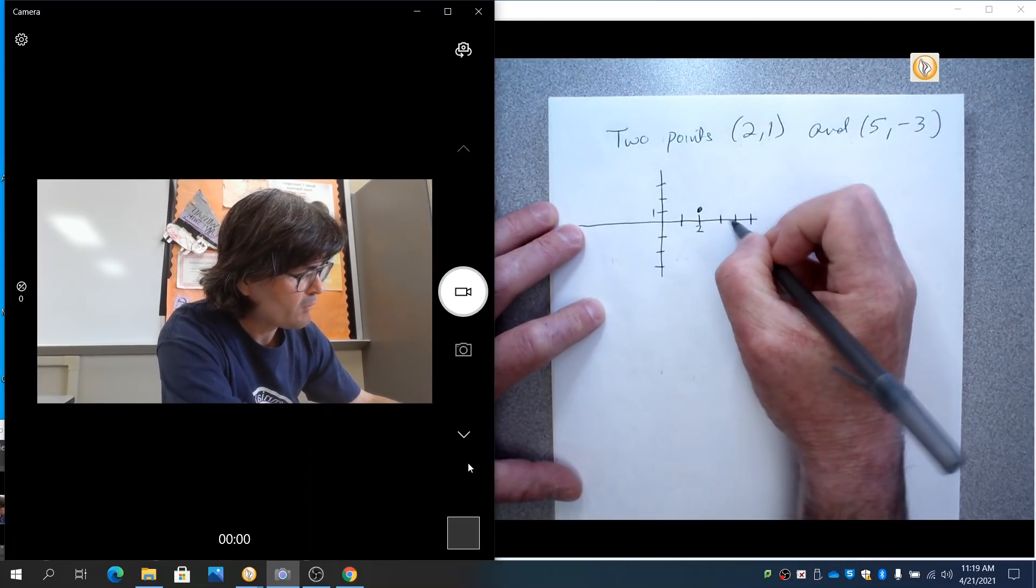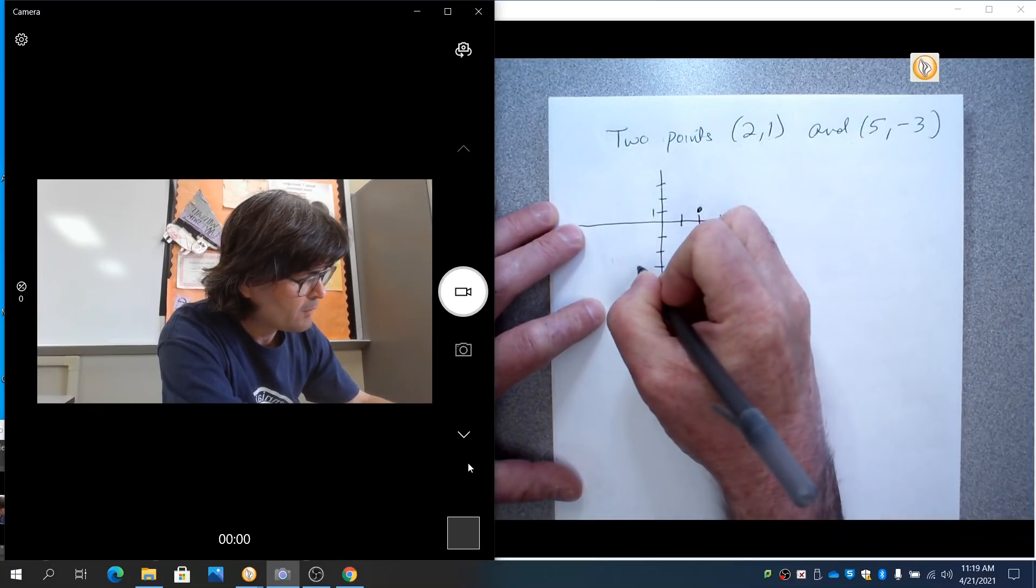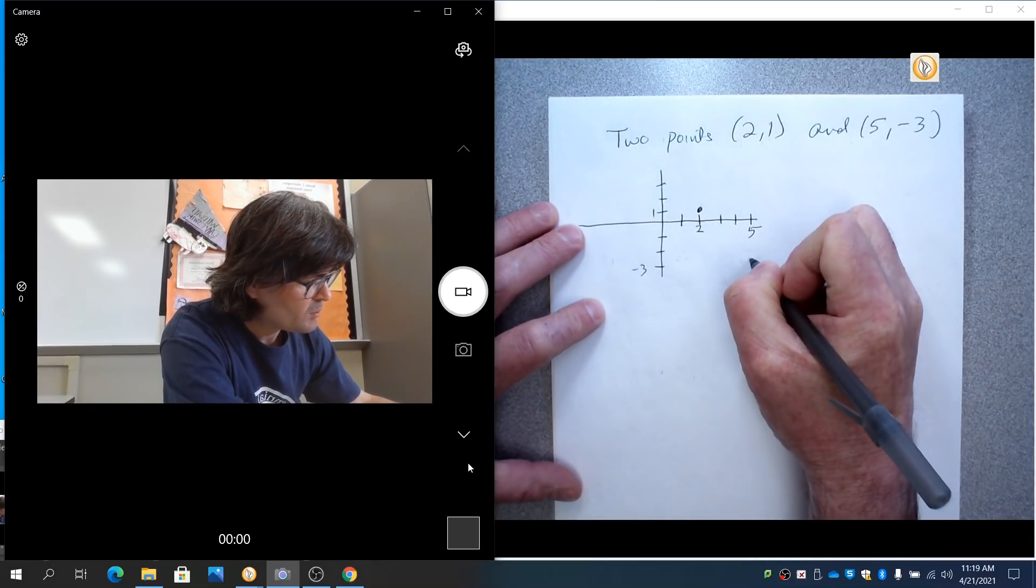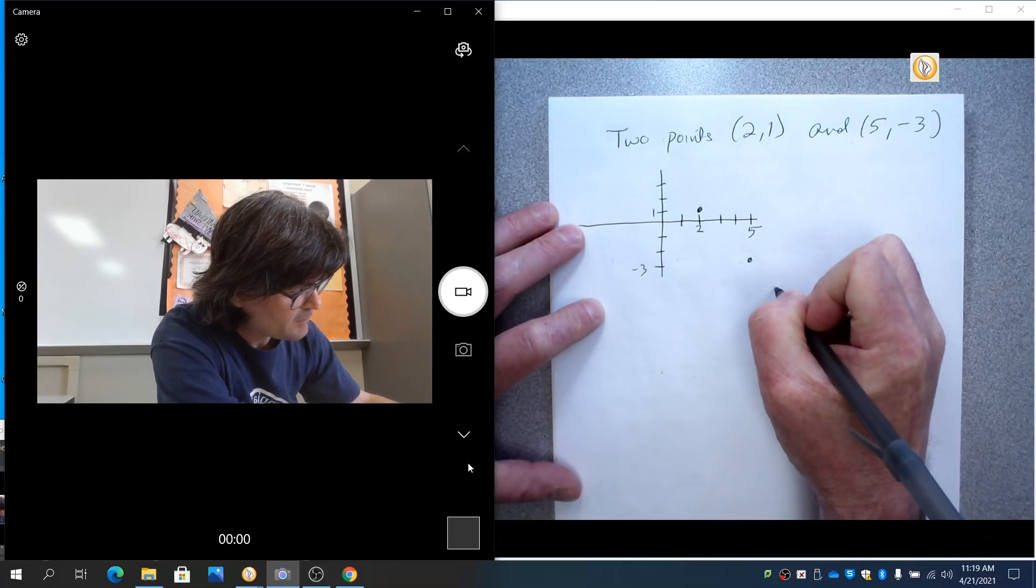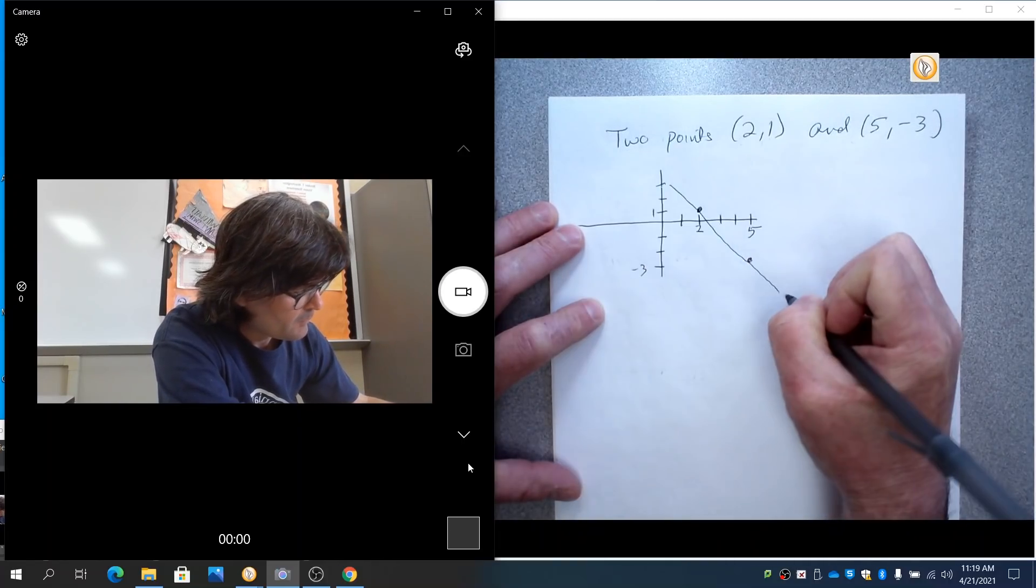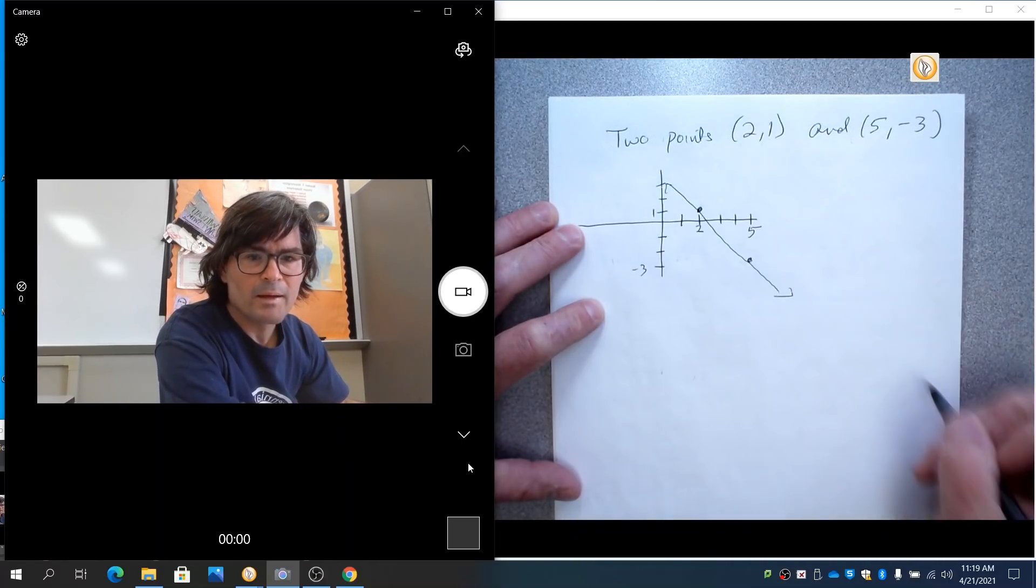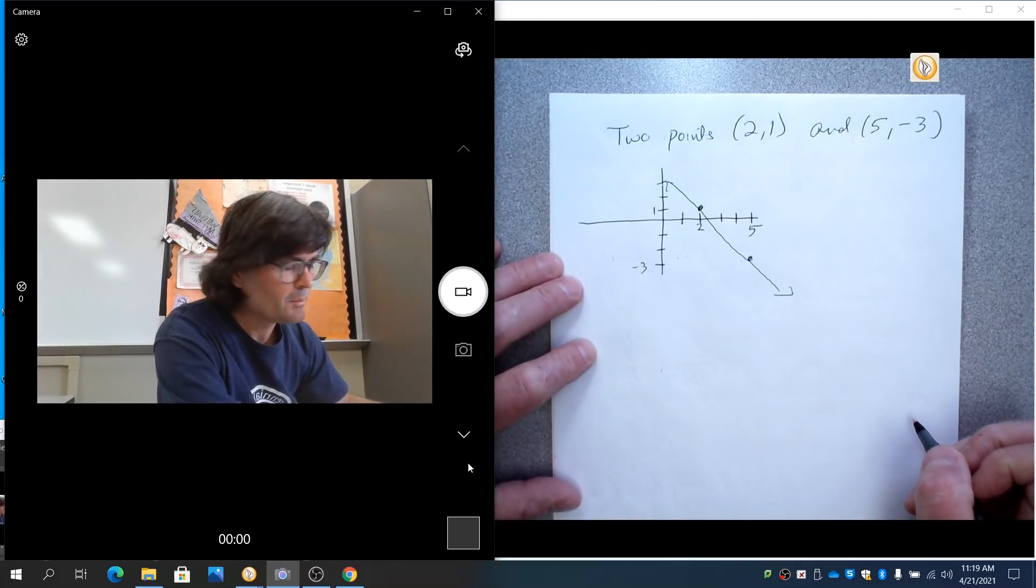And the second point, (5,-3), is right here. So we're looking for the line that looks kind of like this. Not a very good picture, but good enough.